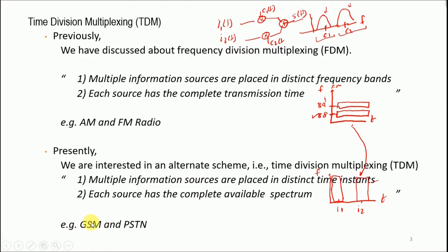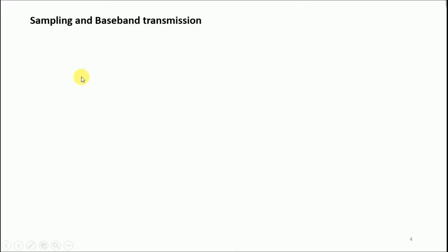Applications of TDM include GSM — that is 2G networks — and public switched telephone networks (PSTNs), for which we use pulse code modulation. We can relate TDM, the multiplexing of different message signals, to a given frame. Also, time division multiple access (TDMA) allows different users to access the same time frame.